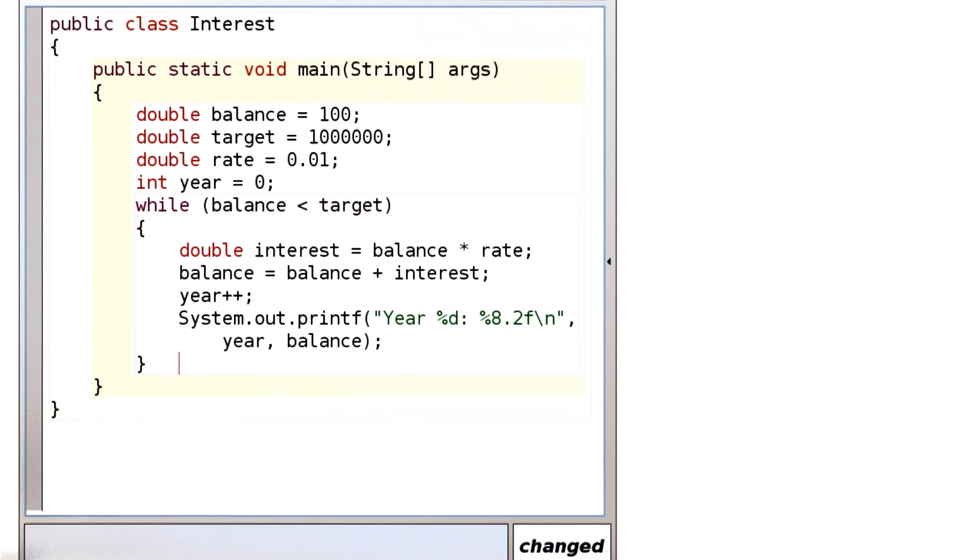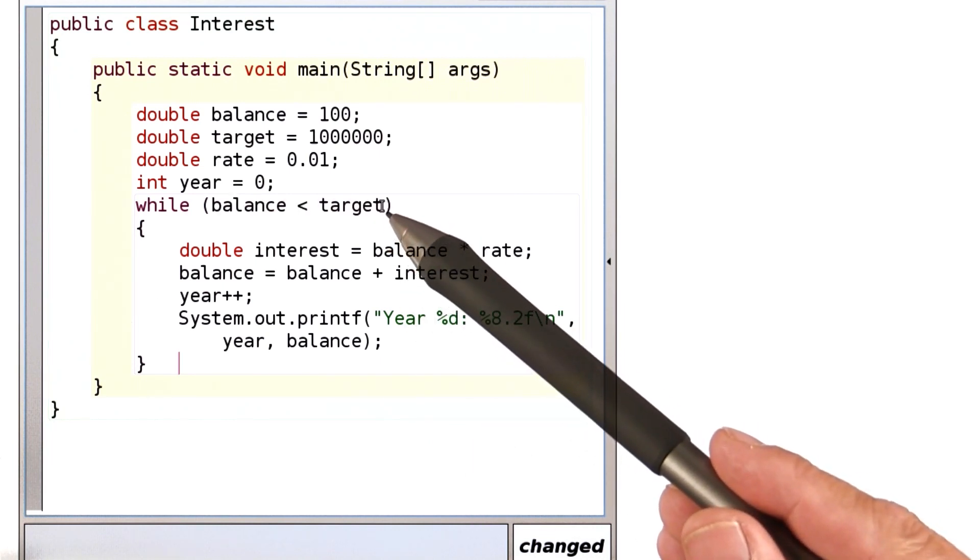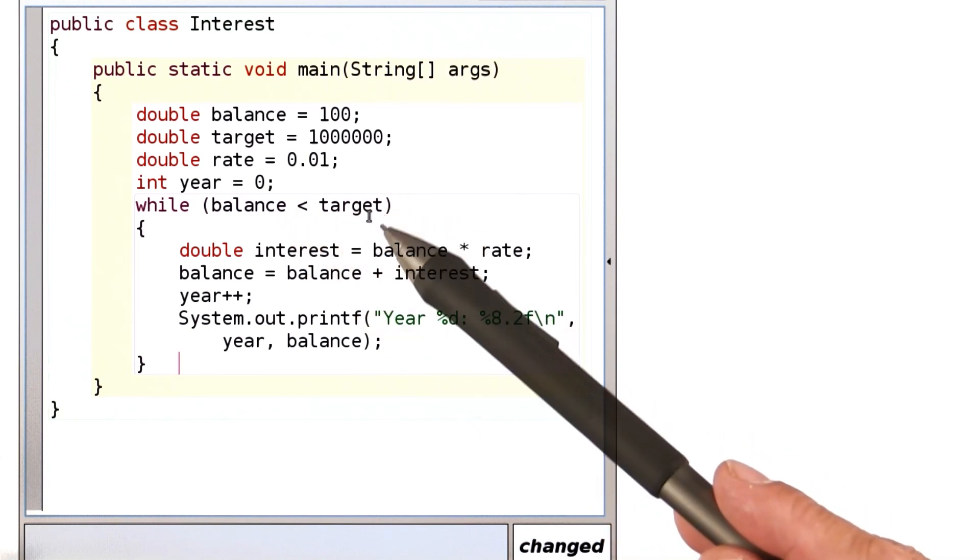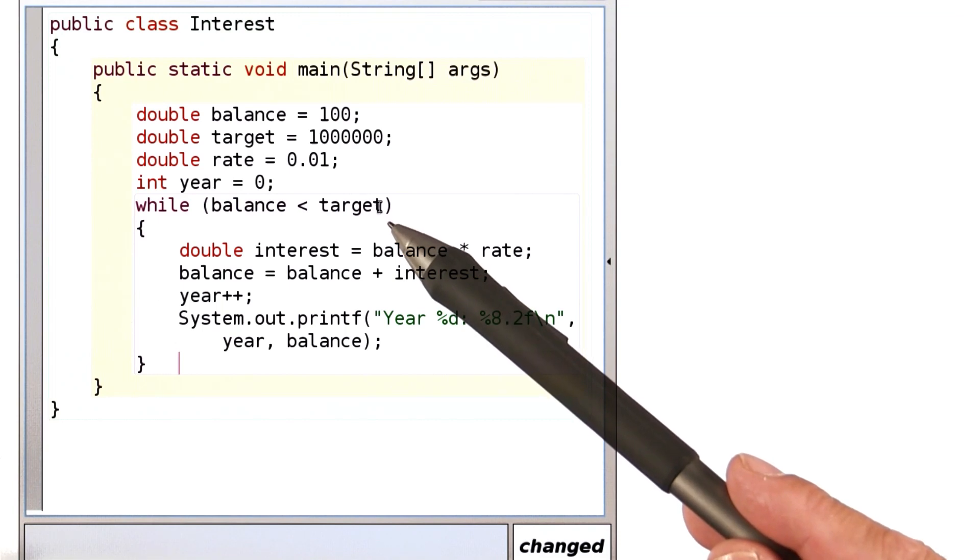How long do we want to do this? We want to do it while the balance is less than the target. The balance starts out at $100, gets larger and larger. Eventually, it'll exceed the target, and then the loop will stop.